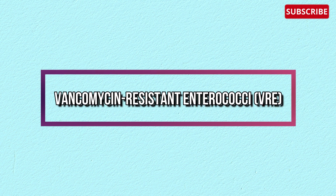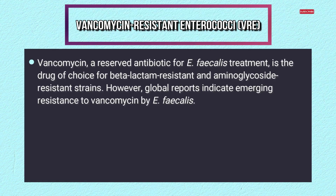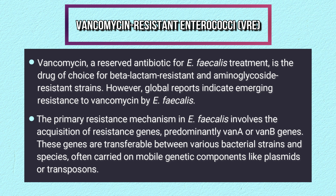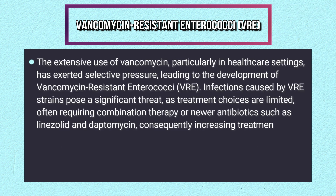Vancomycin-resistant Enterococcus (VRE): vancomycin is a reserved antibiotic and drug of choice for beta-lactam and aminoglycoside resistant strains. However, global reports indicate emerging resistance to vancomycin by Enterococcus faecalis. The primary resistance mechanism involves acquisition of resistance genes, predominantly vanA or vanB genes, which are transferable between bacterial strains and species, often carried on mobile genetic elements like plasmids or transposons. Extensive vancomycin use in healthcare settings has exerted selective pressure, and infections caused by VRE strains pose a significant threat as treatment choices are limited.